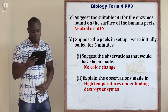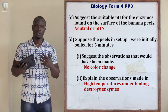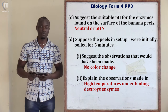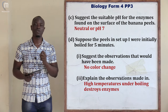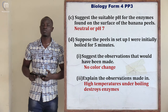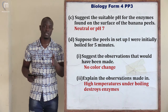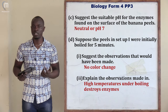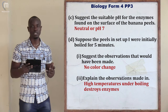Part C asks: suggest a suitable pH for the enzymes found on the surface of banana peel. The suitable pH is neutral. This is because when the banana peels were placed in acidic pH (hydrochloric acid), most of the enzymes got destroyed and denatured, turning the peels yellow/white. But in distilled water (pH 7) and in open atmosphere (neutral pH), they were able to react with oxygen to form a brown coloration. Therefore the suitable pH for these enzymes is neutral.